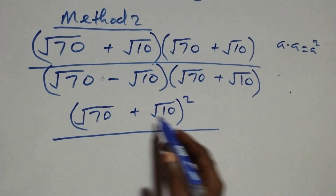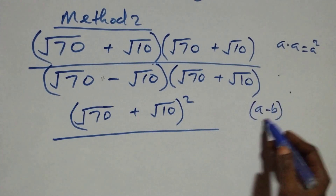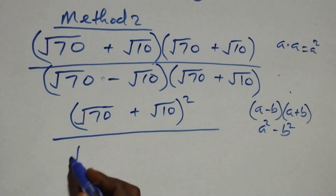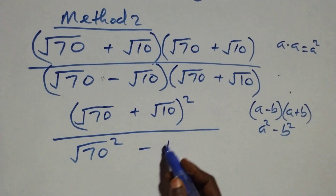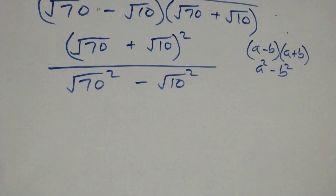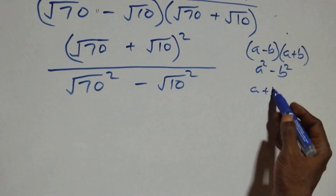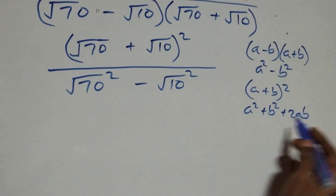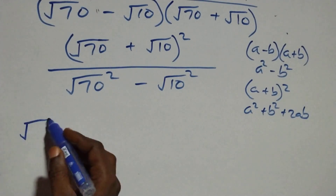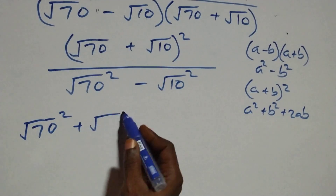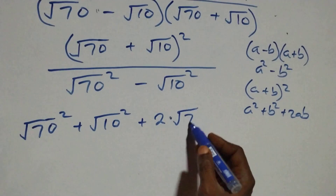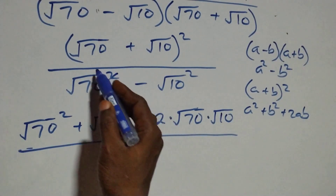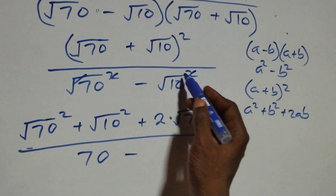The denominator follows the identity (a minus b)(a plus b) equals a squared minus b squared. Here a is root seven so we have root seven squared, and b is root ten so we subtract root ten squared. Squaring cancels the square root, giving seventy minus ten, which is sixty.